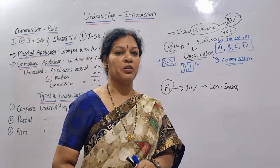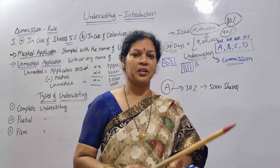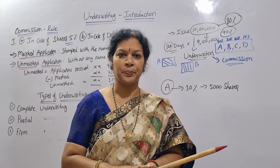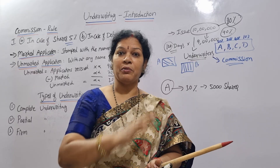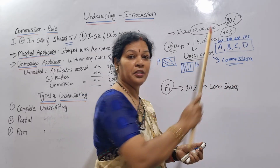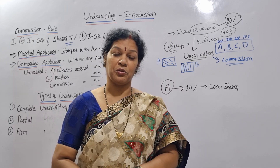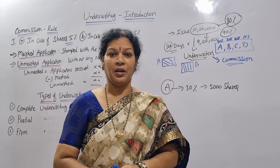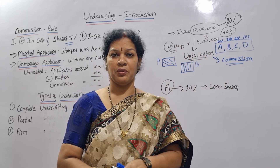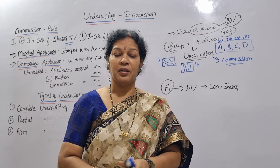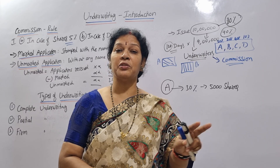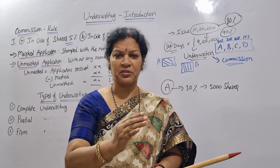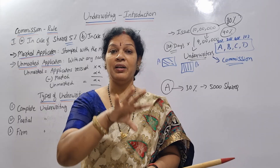Let me show you an example. Underwriters can be an individual person — for example, Mr. X — or a group of people like A, B, C, D who are all underwriters. They can also be nationalized banks. Underwriters are not just any company or firm, but all these types qualify as underwriters.